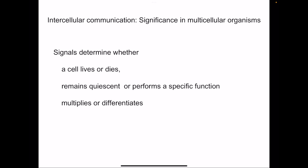What is the significance in multicellular organisms? Signals actually determine whether a cell lives or dies. For example, suppose there is a nerve and it makes contact with the muscle fiber. If there is damage to the neuron, that muscle fiber also degenerates. This is possible because the contact between the neuron and the muscle is not only anatomical and not only for the functioning of the muscle, but also for its growth. The neuron releases certain trophic factors which are important for the survival of the muscle fibers.